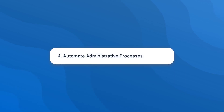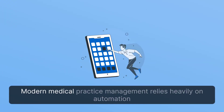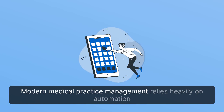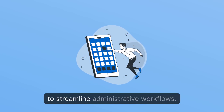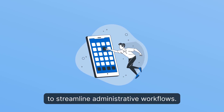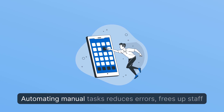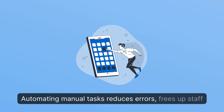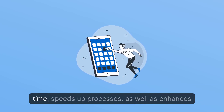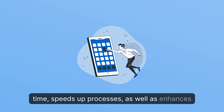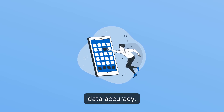Step four: automate administrative processes. Modern medical practice management relies heavily on automation to streamline administrative workflows. Automating manual tasks reduces errors, frees up staff time, speeds up processes, and enhances data accuracy.